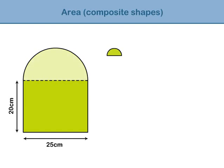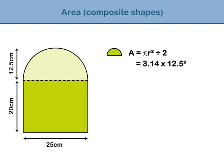Let's begin with the half circle. Remember, the formula for calculating the area of a whole circle is: area equals pi times the radius squared. To calculate the area of the half circle, we need to first calculate the area of the full circle, and then divide our answer by 2. In this example, the diameter is 25 centimetres, so the radius of the circle is 12.5 centimetres. The area of the circle equals pi times the radius squared. Since we only want the area of the half circle, we divide the answer by 2, giving an area of 245.3 centimetres squared.